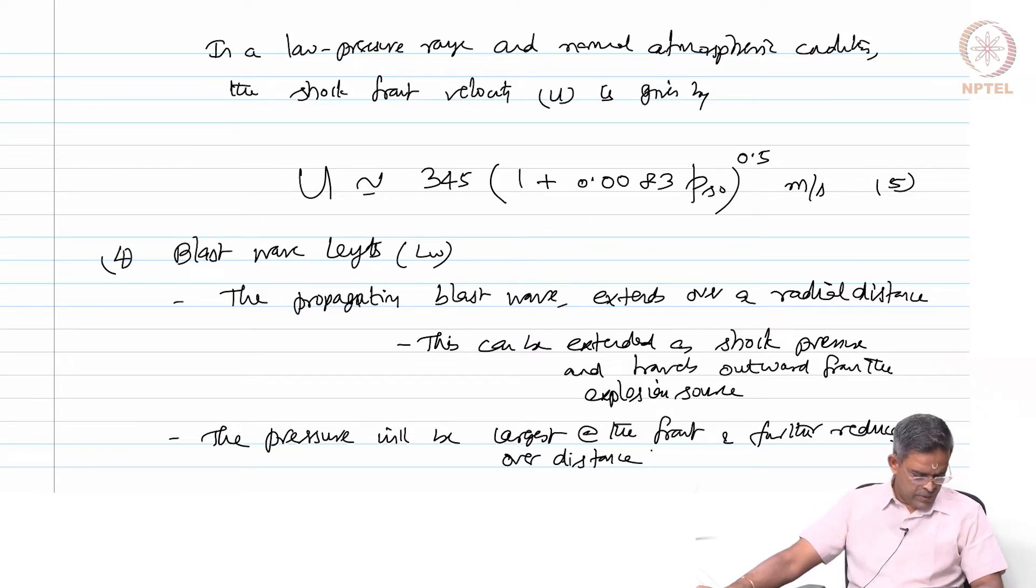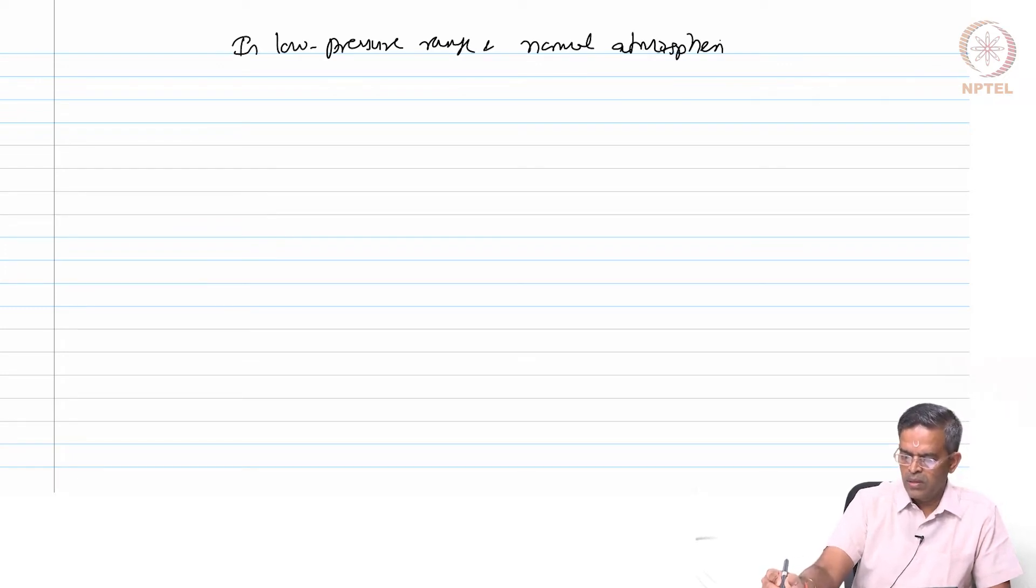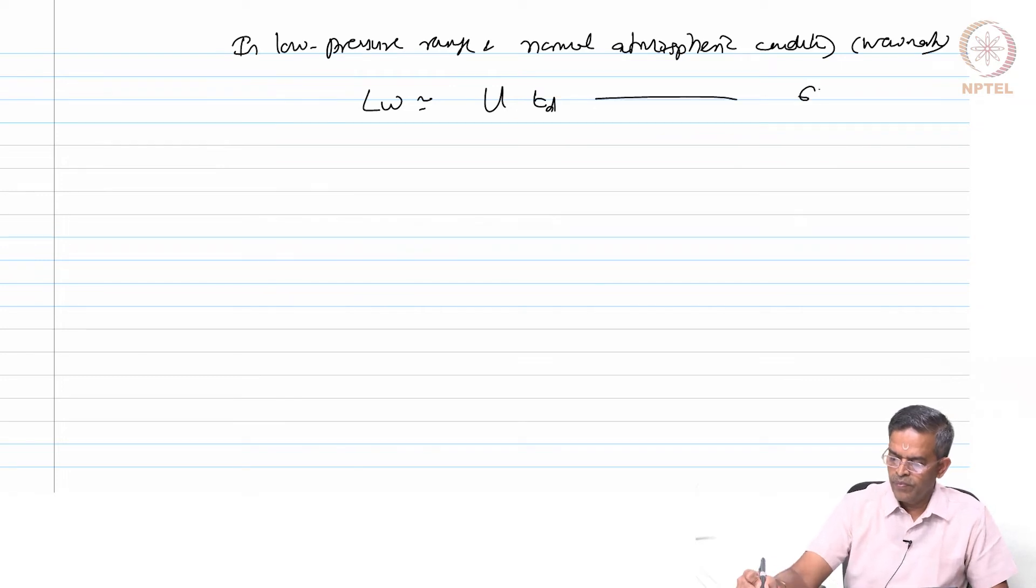In low pressure range and normal atmospheric conditions as given by Newmark, Lw can be approximated as U into Td.